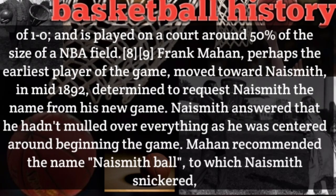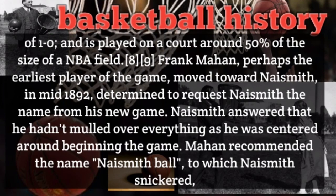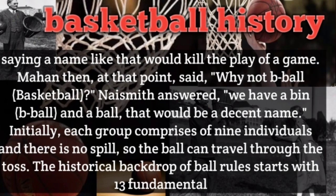Originally, each team consisted of nine players and there was no dribbling, so the ball could only travel by passing. The history of basketball rules begins with 13 fundamental rules written by James Naismith himself.